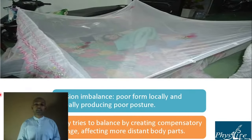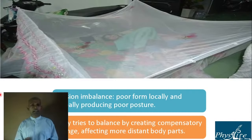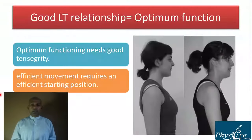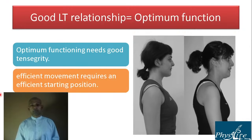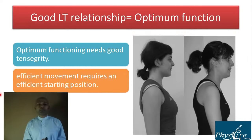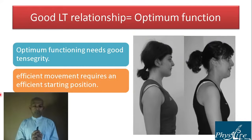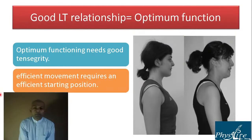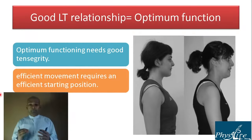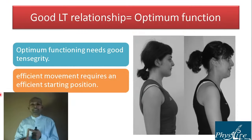We should always be well aware of the global and local relationship, because the body tries to balance by creating compensatory changes — flat foot is a good example. Another is the upper cross syndrome of Janda, where good length-tension relationship is needed for optimum function. Efficient movement requires an efficient starting position. If you protract and medially rotate your shoulder, shoulder flexion is restricted. If you sit in a crouched position and try to take a deep breath, the breath is shallower.